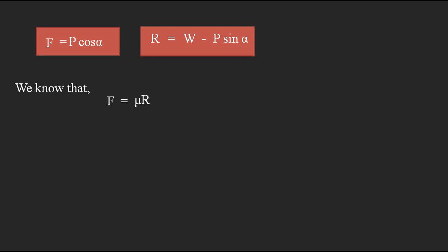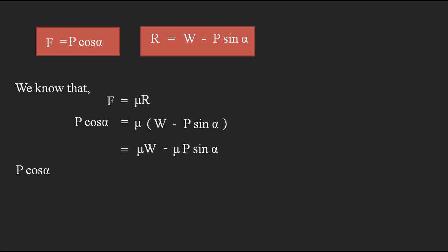According to the definition of the coefficient of friction, F = μR. Substituting from the two equations: in place of F we write P cos alpha, and in place of R we write W minus P sin alpha. This gives: P cos alpha = μ(W minus P sin alpha), which expands to P cos alpha = μW minus μP sin alpha. Taking all P terms to the left side: P cos alpha plus μP sin alpha = μW.